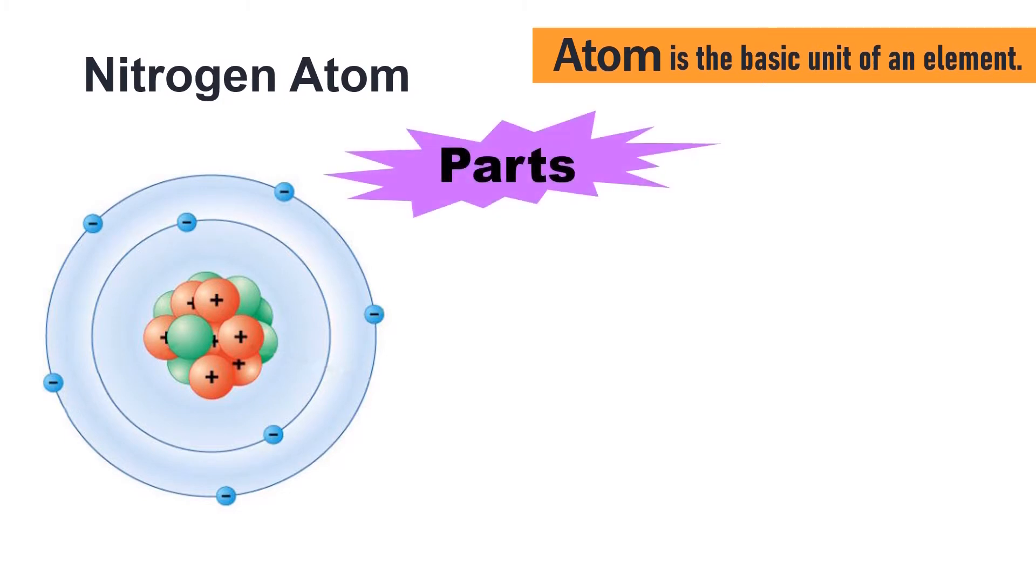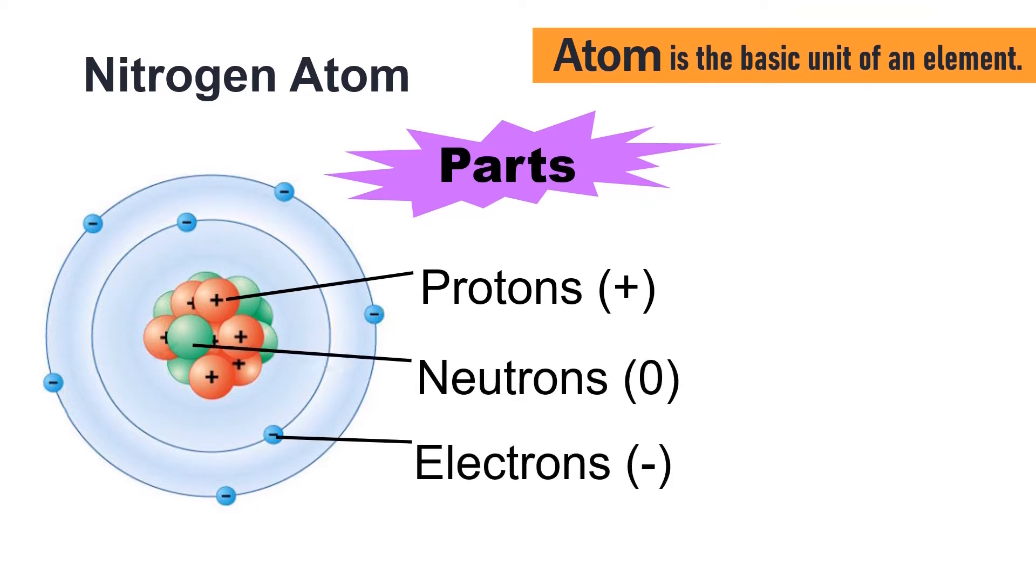Atoms have three parts. Those are protons, which are positive charge, neutrons, which are no charge, and electrons, which are negative charge.